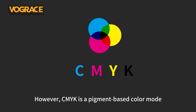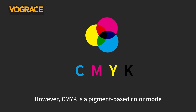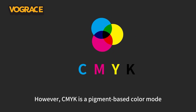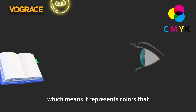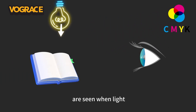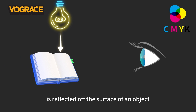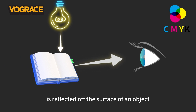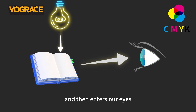However, CMYK is a pigment-based color mode, which means it represents colors that are seen when light is reflected off the surface of an object and then enters our eyes.